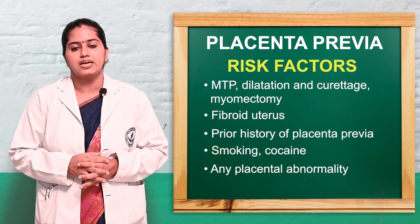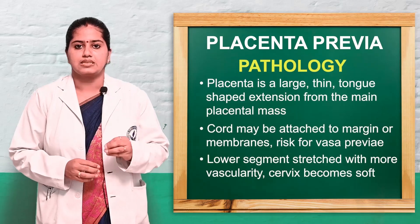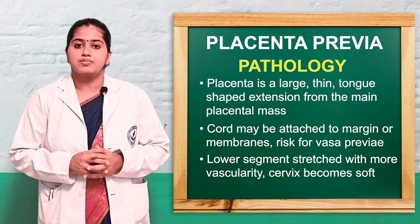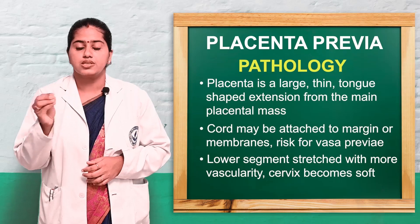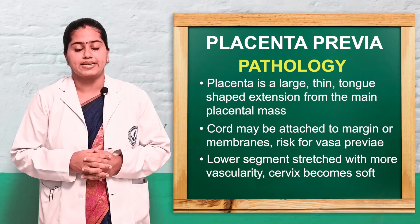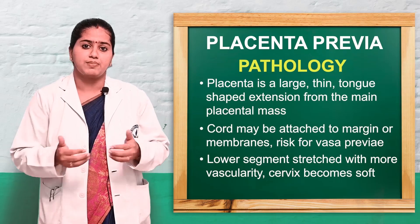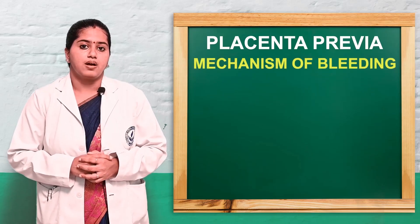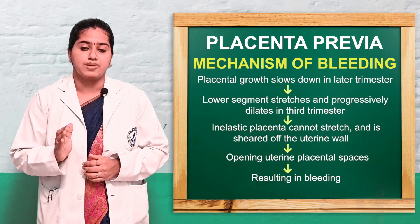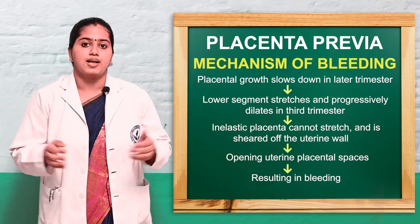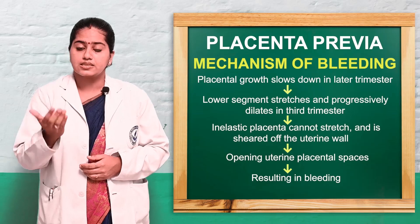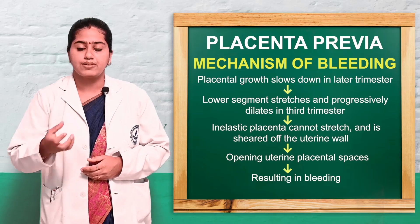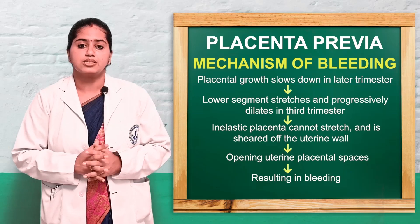In pathology, the placenta becomes very large and thin, tongue-shaped, and it lies in the lower uterine segment. The cord may be attached to the margin or membranous part, increasing the risk of vasa previa. The lower segment is very much stretched and the cervix becomes very soft. In the later trimester, placental development stops while the lower uterine segment stretches; the inelastic placenta cannot stretch, it shears away, opening uteroplacental spaces and causing bleeding.